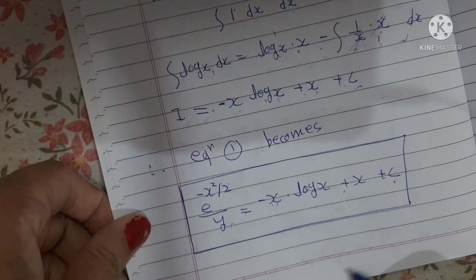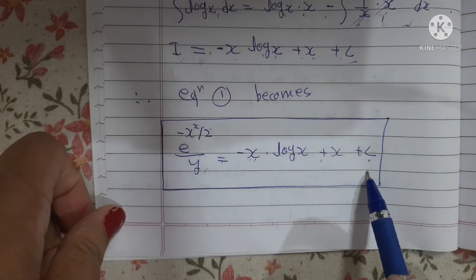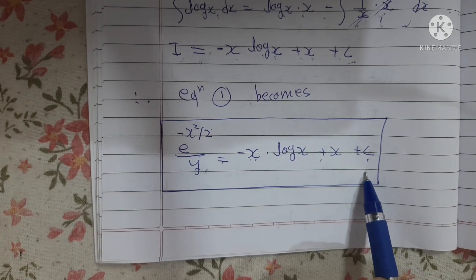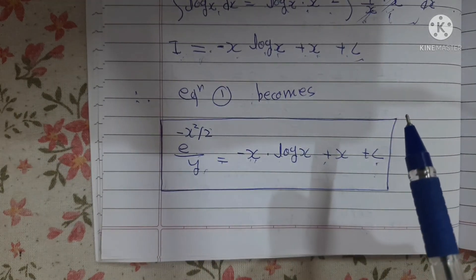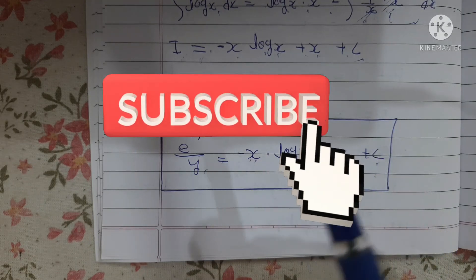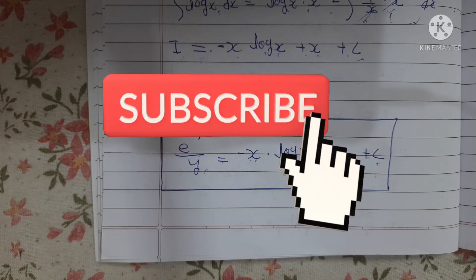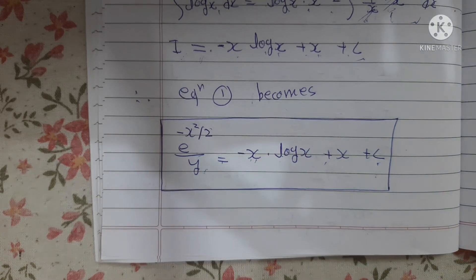Therefore equation 1 becomes: e^(-x²/2)/y = x·log(x) − x + C. This is the general solution of the Bernoulli's differential equation. If you have any doubt in any step, please write in the comment section. Keep practicing, and if you like my videos please subscribe to my channel. Thank you, students.